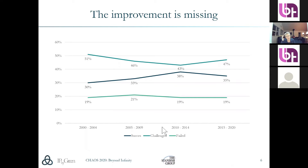I gave another presentation in December where I talked about the trillions of US dollars we're losing on failed and challenged projects. If we could bump up the successful project rate to around 95%, even though it might cost us some work in the process, worldwide we would get a great return on investment.